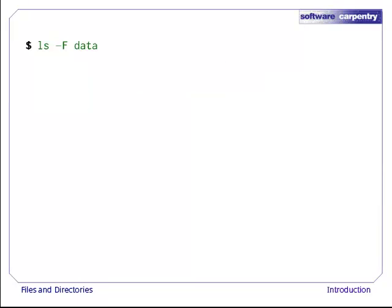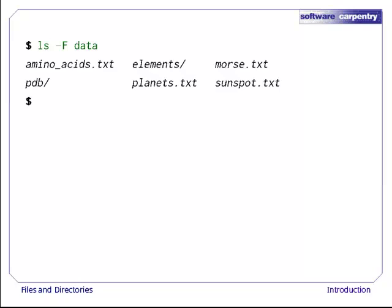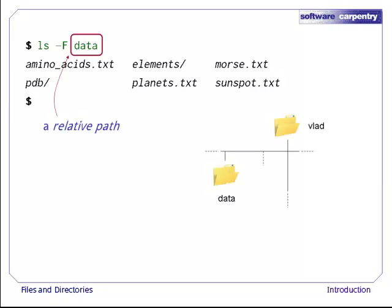Now, let's run the command ls -f data, which tells ls to give us a listing of what's in our data directory. The output shows us that there are four text files and two directories. This hierarchical organization helps us keep our work organized. Notice while we're here, how we spelled the directory name data.